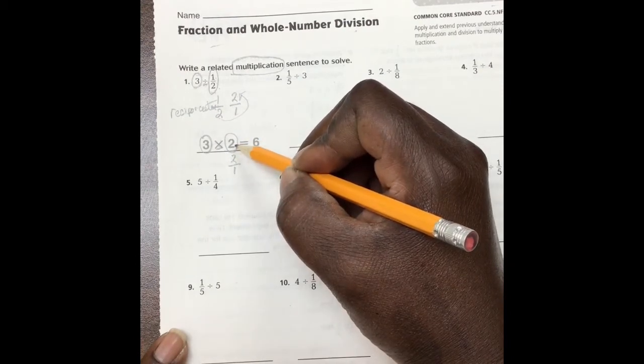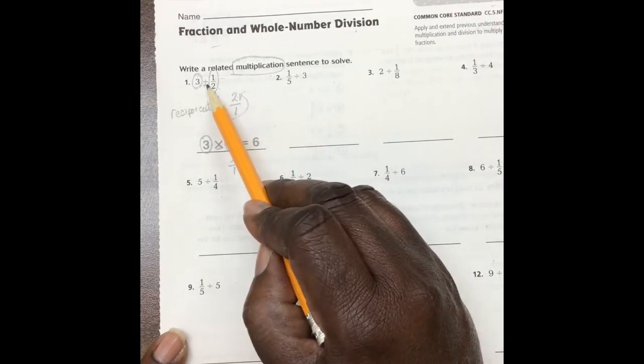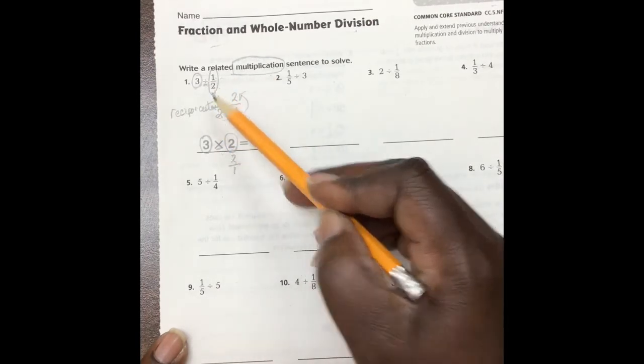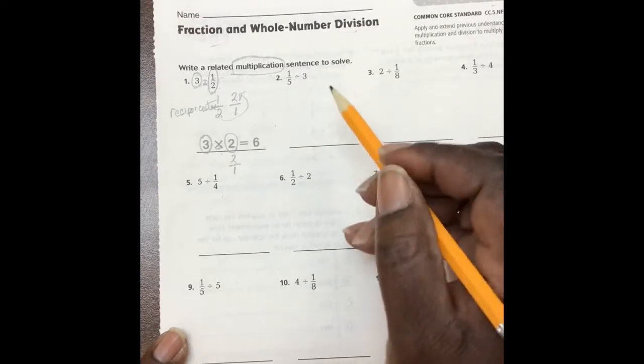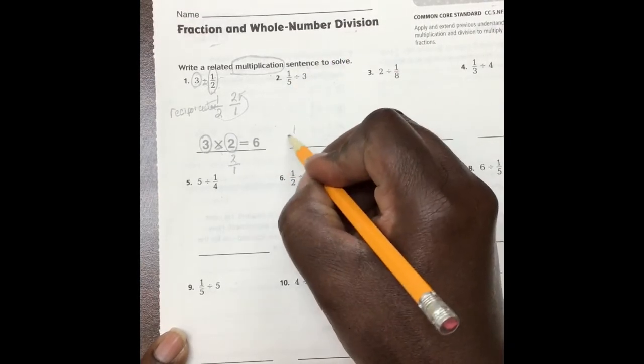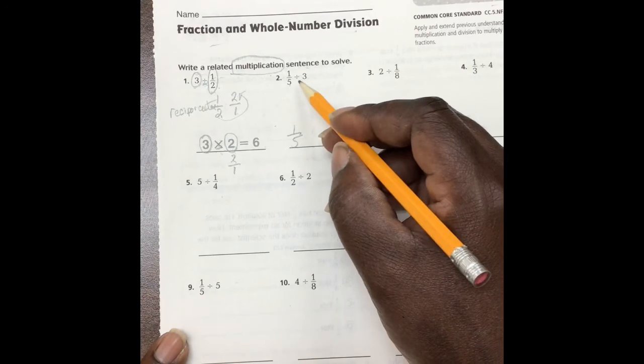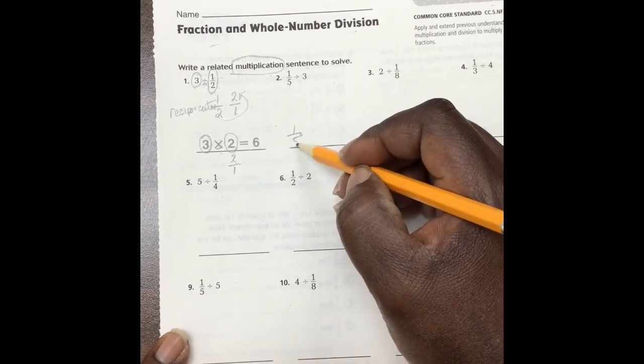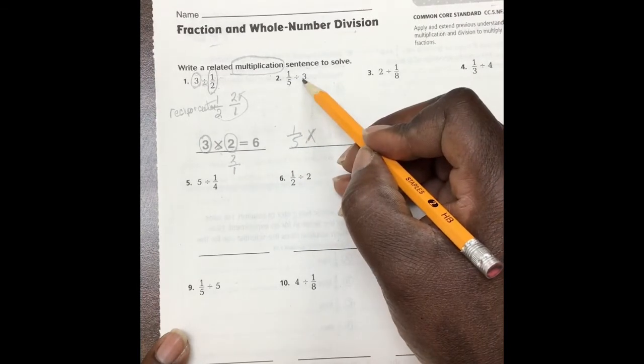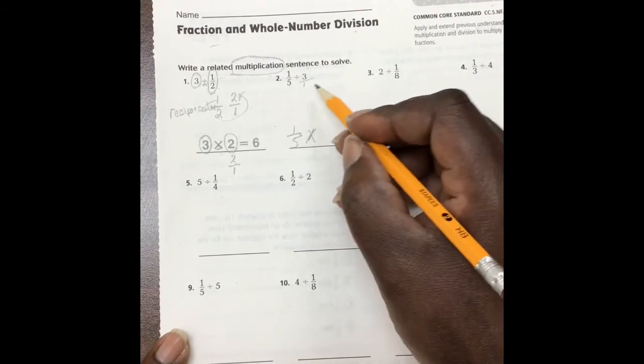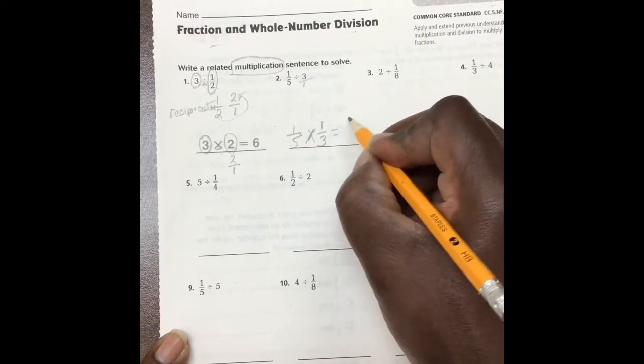3 whole. We're going to create a multiplication. We're going to say 1 fifth. Change this. Multiply. And so, therefore, instead of this being 3 whole, which in fraction form is 3 over 1, we're going to flip it and it's going to be 1 over 3. And therefore, when we multiply, we have 1 over 15.